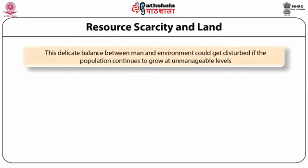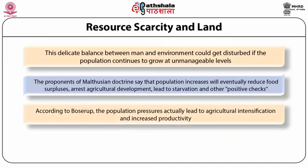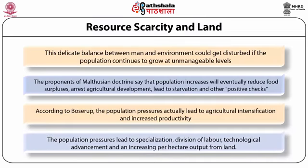The delicate balance between man and environment gets disturbed if population continues to grow at unmanageable levels. Proponents of the Malthusian doctrine say that population increases will eventually reduce food surpluses, arrest agricultural development, and lead to starvation and other positive checks. Boserup presented the opposite view: population pressures actually lead to agricultural intensification and increased productivity, through specialization, division of labor, technological advancement, and increasing per hectare output from land.